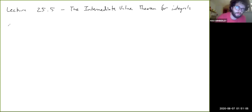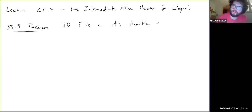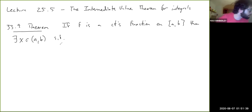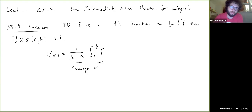So let me state the theorem. This is 33.9. If f is a continuous function on [a, b], then there exists an x in the open interval (a, b) such that f of x equals 1 over b minus a times the integral from a to b of f.